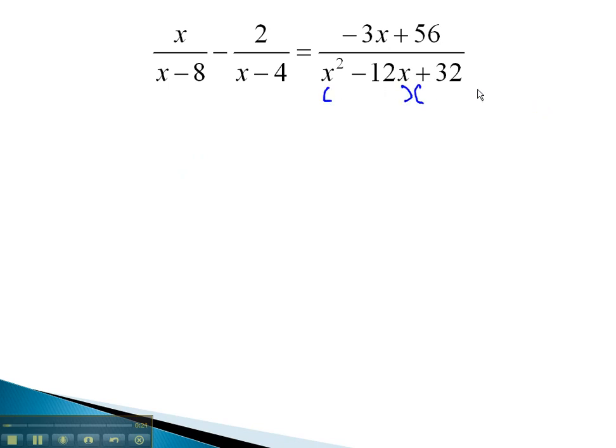As usual, we will want to start by factoring the denominators. This factors to x minus 4, x minus 8. Looking at the other denominators, we can see that our least common denominator is going to be x minus 8 times x minus 4.